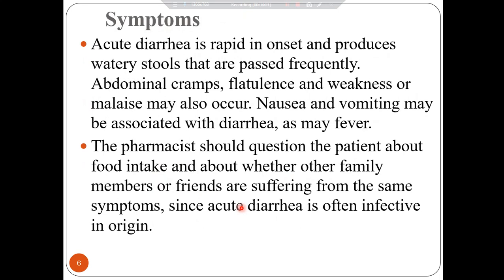Acute diarrhea is rapid in onset and produces watery stools passed frequently. Abdominal cramps, flatulence, weakness, or malaise may also occur. Nausea and vomiting may be associated with diarrhea and sometimes accompanied by fever. The pharmacist should question the patient about food intake and whether other family members are suffering from the same symptoms, since acute diarrhea is often infective in origin.